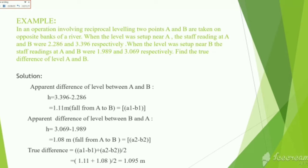Now, coming to the example. In this example, they have given that staff readings at A and B when the setup is near to A were 2.286 and 3.396 respectively. When the level was set up near B, the staff readings at A and B were 3.069 and 1.989 respectively. Now, we need to find the true difference of level between A and B. Apparent difference of level between A and B, that is h, is equal to 3.396 - 2.286, that is equal to 1.11 meter fall from A to B, that is equal to a1-b1.